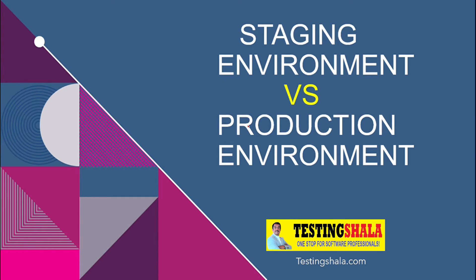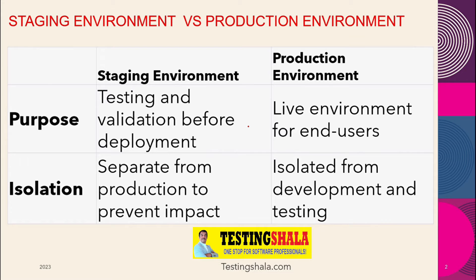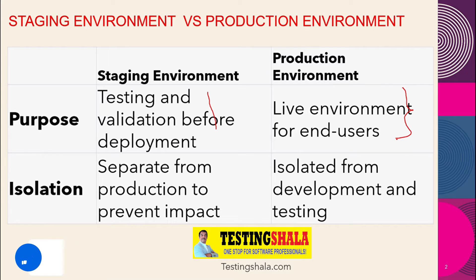First, we will look at the purpose of staging environment versus production environment. The purpose of staging environment is for testing and validation before we deploy into the production environment. The production environment is more of a live environment for the end user — that is the main purpose difference between staging and production environments.